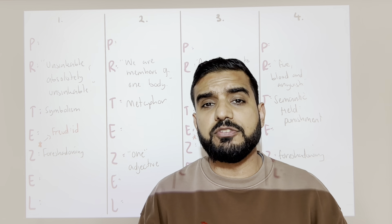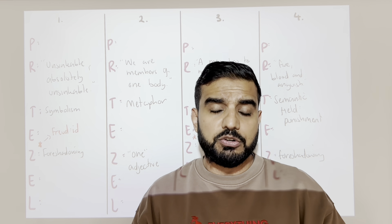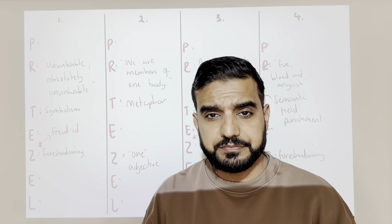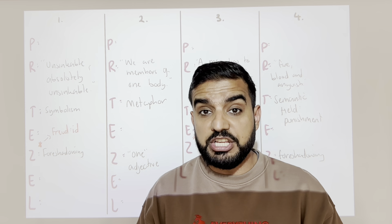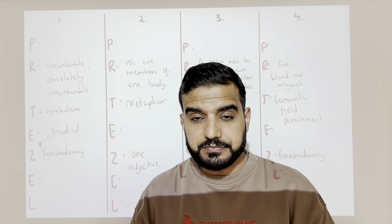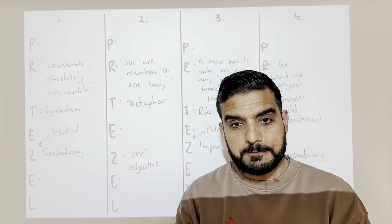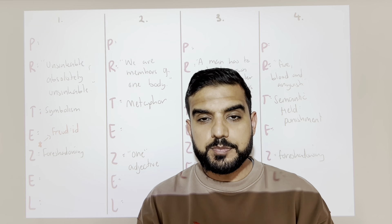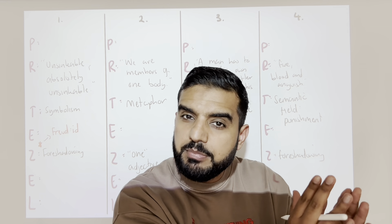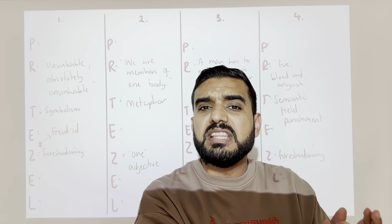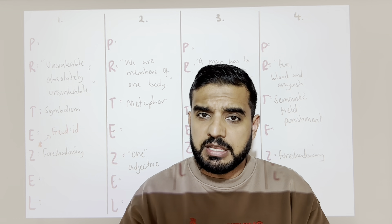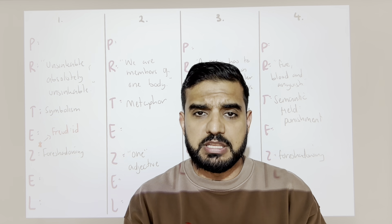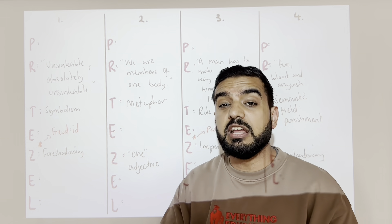If you get a question about Gerald, Eric, Mr. Birling, Mrs. Birling, or even Sheila, you can show how there was a struggle — all the characters struggled to be one body. Sheila and Eric changed a little by the end, but even that change is questionable. Mr. Birling, Mrs. Birling, and Gerald were all resistant to being part of a body, because this is a direct threat to their ideology and their way of life.